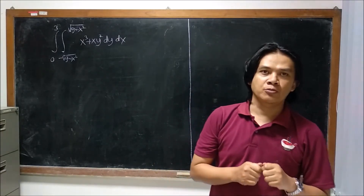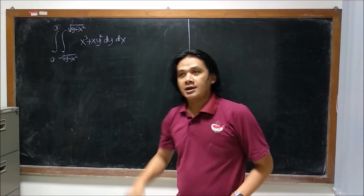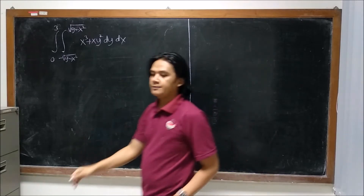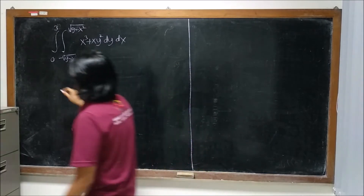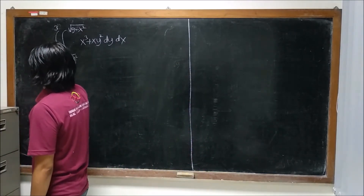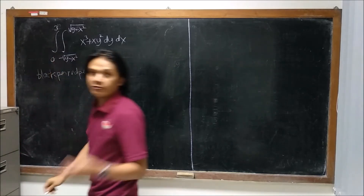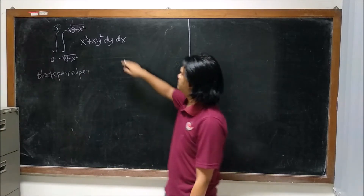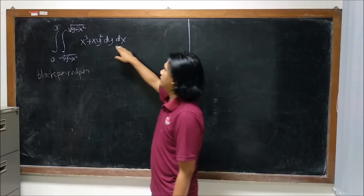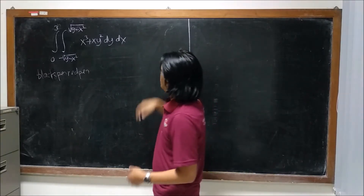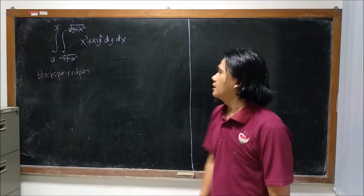Hello, welcome back again to Bermatematica channel. On this video we're going to discuss how to compute this double integral. This double integral is solved by blackpen and redpen using three methods: the first one is by using iterated integral with the order of integration dy dx, the second one with the order dx dy, and the third method is by using the polar integral.